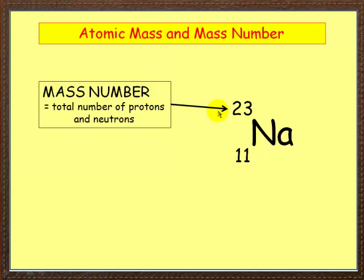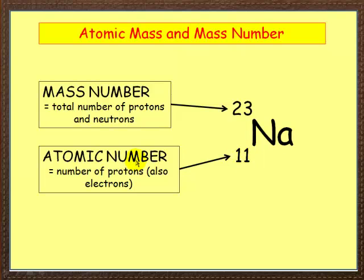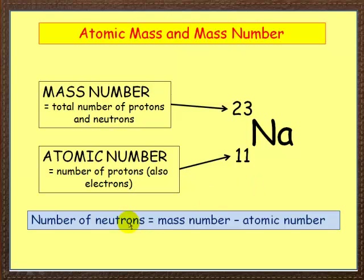Now what are they? Well, the 23 is the mass number, and this tells us the total number of protons and neutrons. Down here we've got the atomic number, and this is the number of protons. It also tells us how many electrons there are as well. Most textbooks and most periodic tables have them this way round, though in a few they put these the other way round, which is a little bit confusing. Just remember: the bigger one is the mass number, the smaller is the atomic number.